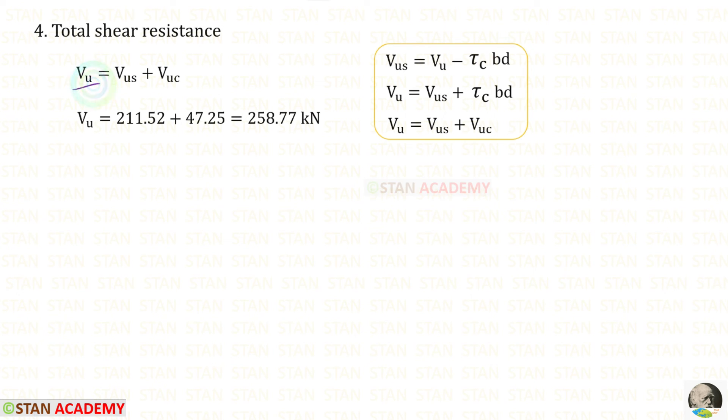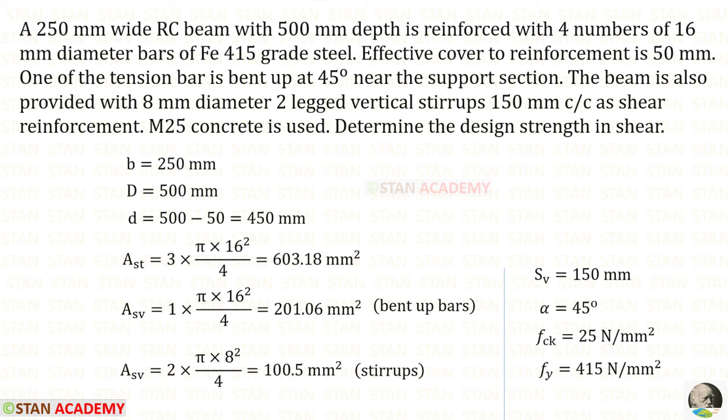To find VU, we have to add VUS and VUC. So that we will get 258.77 kN. Now, let us see the last problem. In this problem, all of the data is same, except one change.